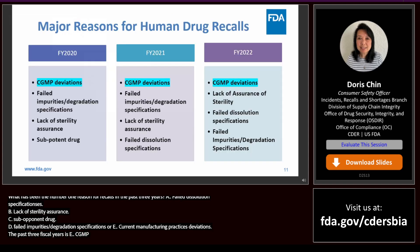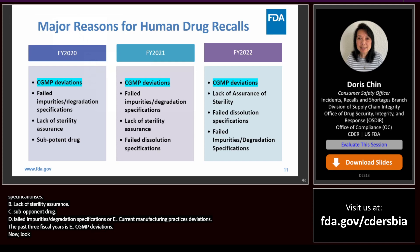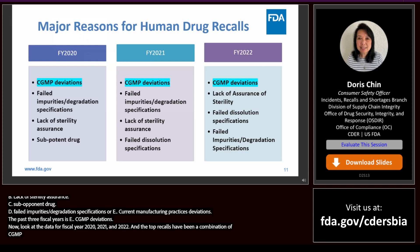Looking at data for fiscal years 2020, 2021, and 2022, the top reasons for human drug recalls have been a combination of CGMP deviations, failed impurities and degradation specifications, lack of sterility assurance, subpotent drug, and failed dissolution specifications — with CGMP deviations as the number one reason.